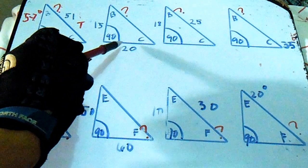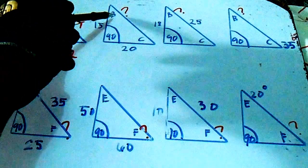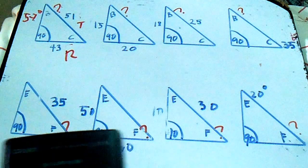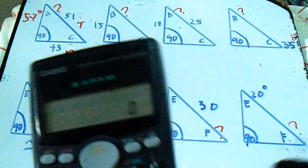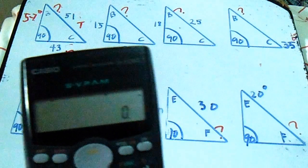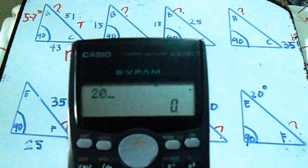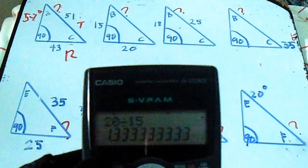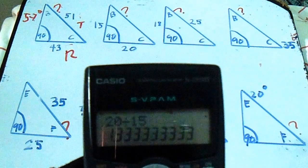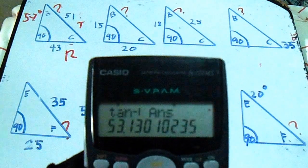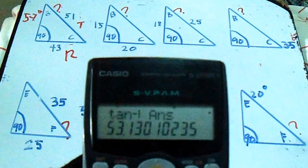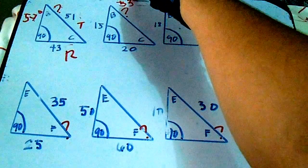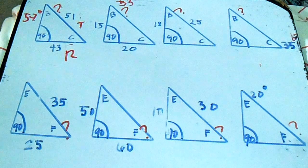Next is number two. We have a given of run and set — find the degrees using the same procedure but with tangent. Divide 20 by set 15, then press shift and inverse tangent. Our answer is 53 degrees.